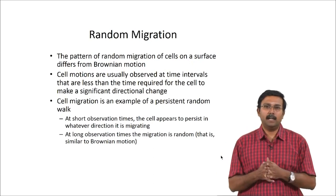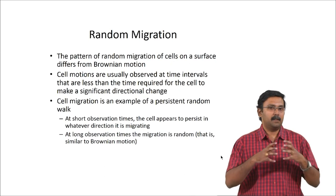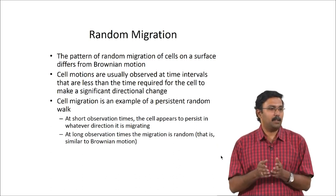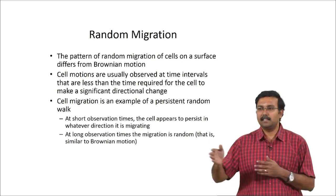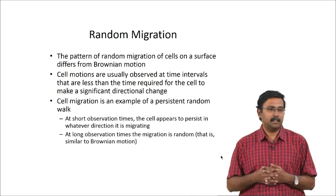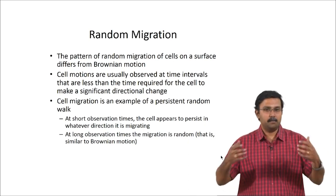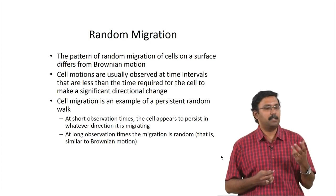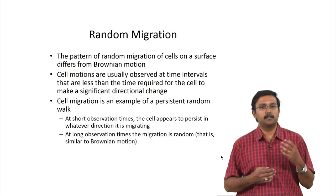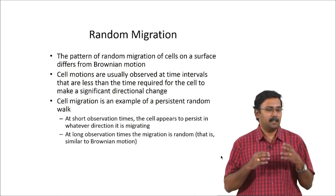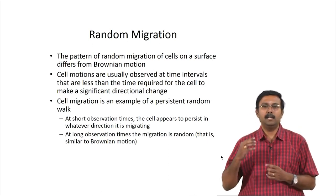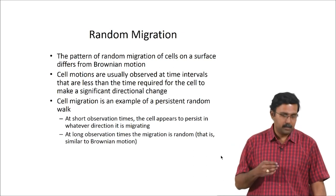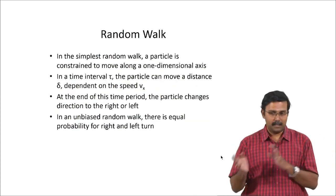The pattern of random migration of cells can be similar to Brownian motion if observed for a long period of time — but if observed only for short periods it will not be. You need significant directional changes to look at it as a Brownian motion analog. Cell migration is actually a very good example of something called a persistent random walk: at short observation times cells seem to be persisting towards one direction, and for long observation times cells are migrating randomly. It represents both sides.